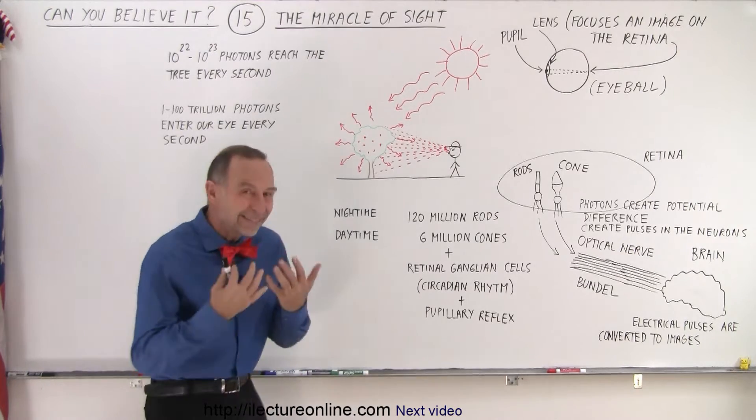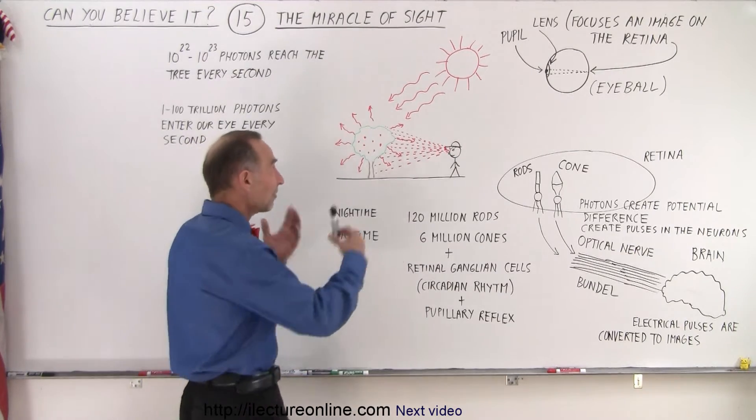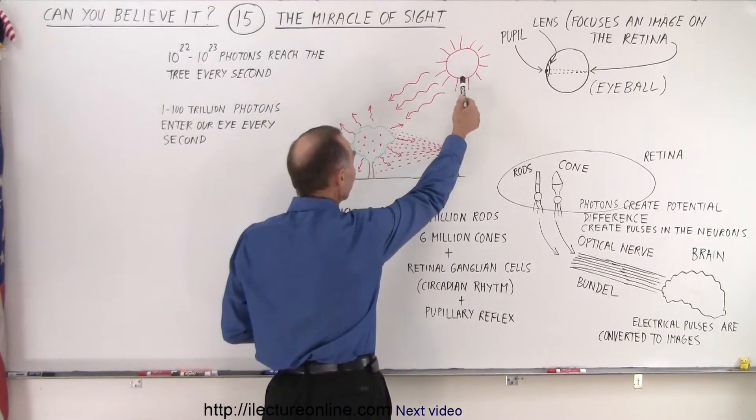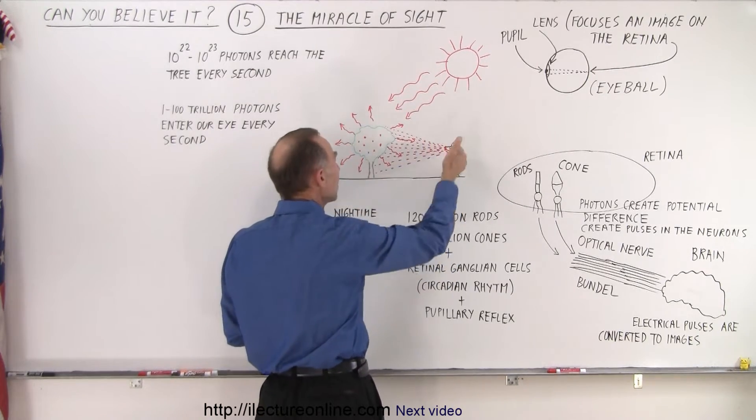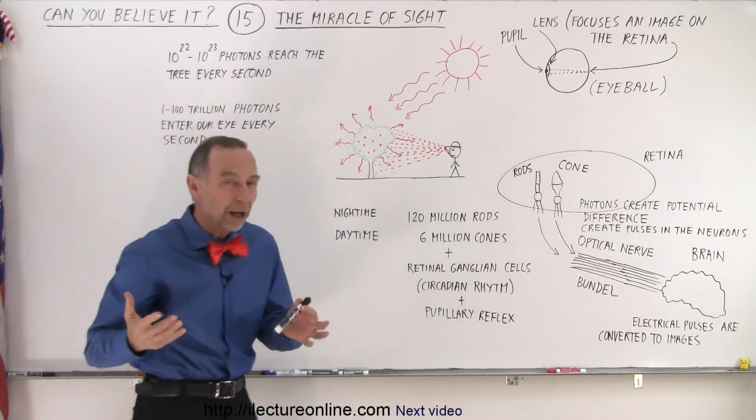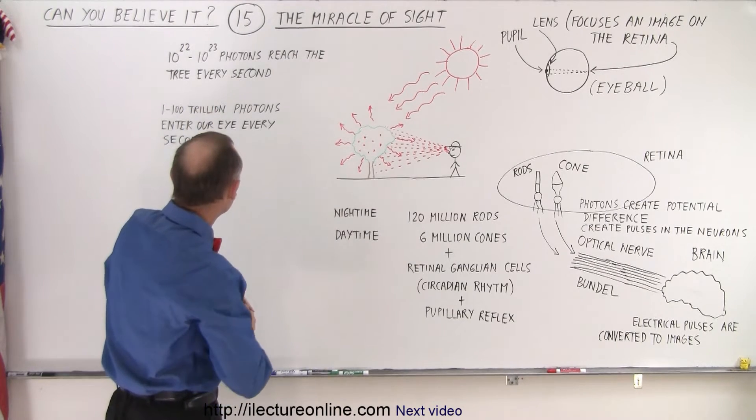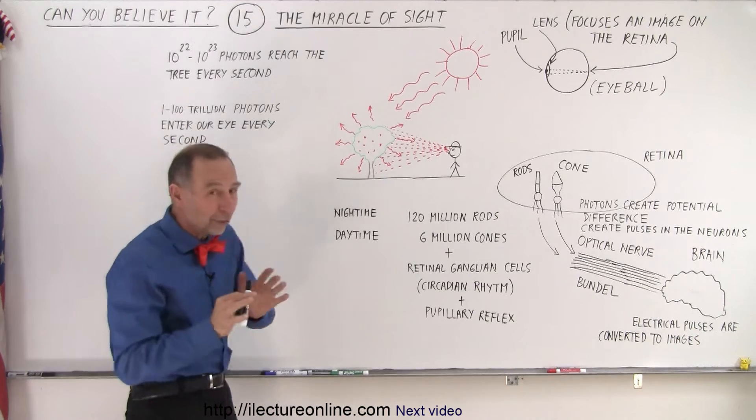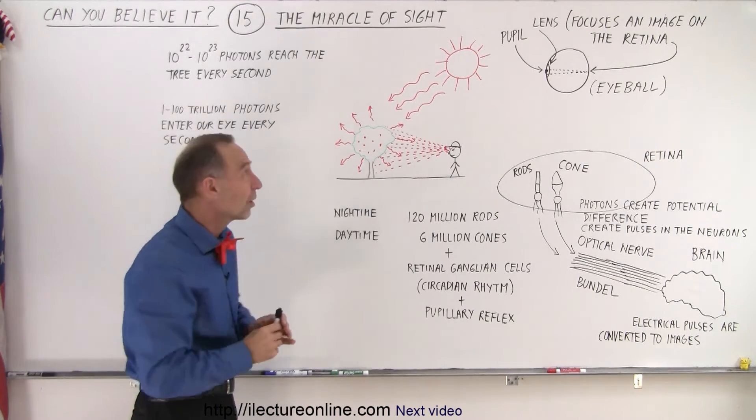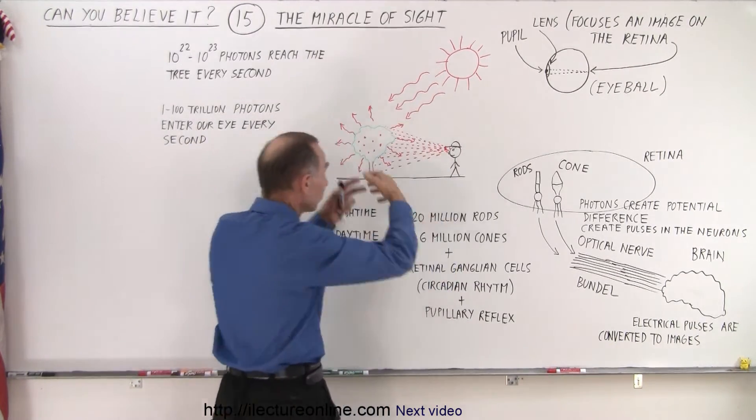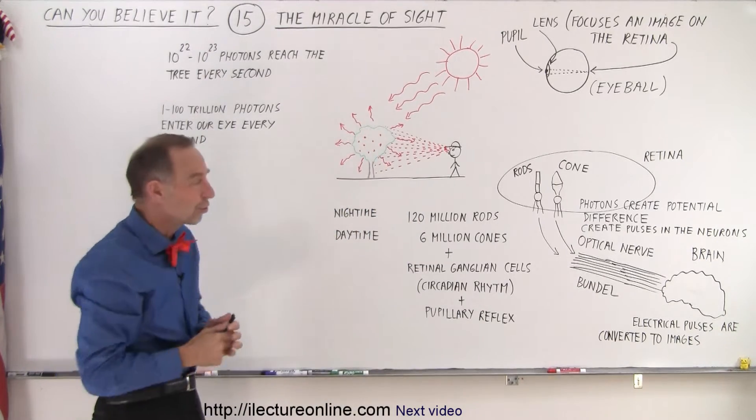In order for us to see an image, we have to have light. Let's say the sun provides the light and the light shines on a tree and we see the tree. There's about 10 to the 22 to 10 to 23 photons—that's a huge number of photons that hit the tree from the sun every single second, presuming we have a reasonably sized tree.